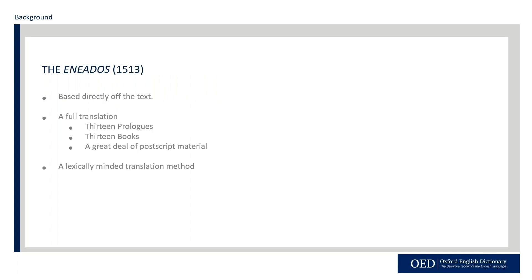However, Douglas is also unique in this tradition, especially when it comes to the Eniados. The Eniados is the first full translation of the Aeneid in either the English or Scottish tradition. By translation, I mean it is based directly off the source text, unlike Chaucer's account of Dido in The Legend of Good Women or Caxton's Eniados, which are adaptations. In the prologues to the Eniados, Douglas points out these adaptations as examples of things you shouldn't do with the Aeneid.